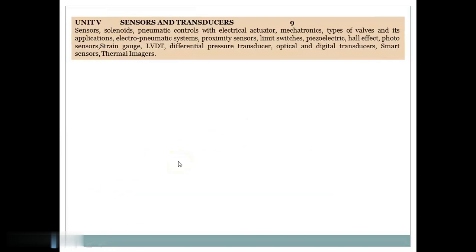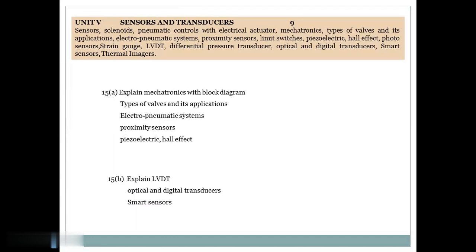Unit 5 is Sensors and Transducers. Students are asked to know the basic definitions of Sensors and Transducers. If you consider 15A, Explain Mechatronics with Block Diagram, Types of Valves and Its Application, Electro-Pneumatic Systems, Proximity Sensor, Piezo-Electric and Hall Effect Sensor all are important from 15A.